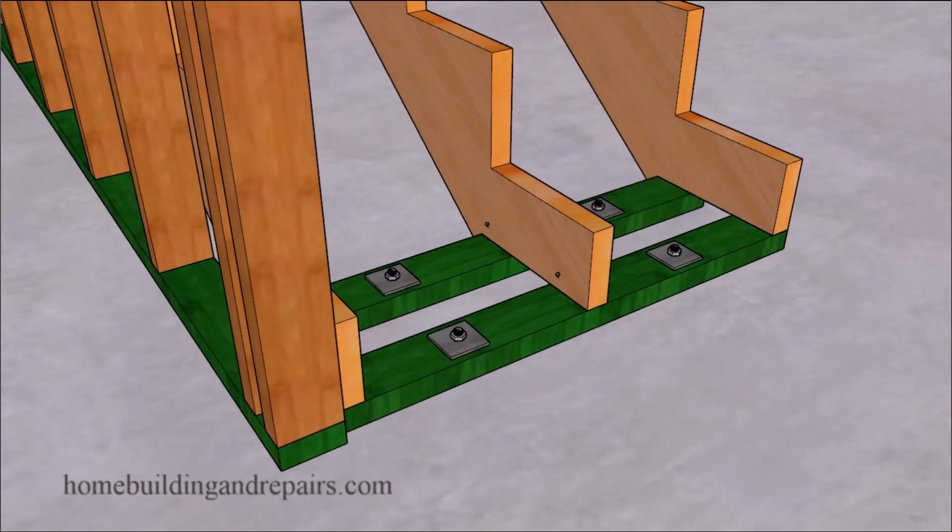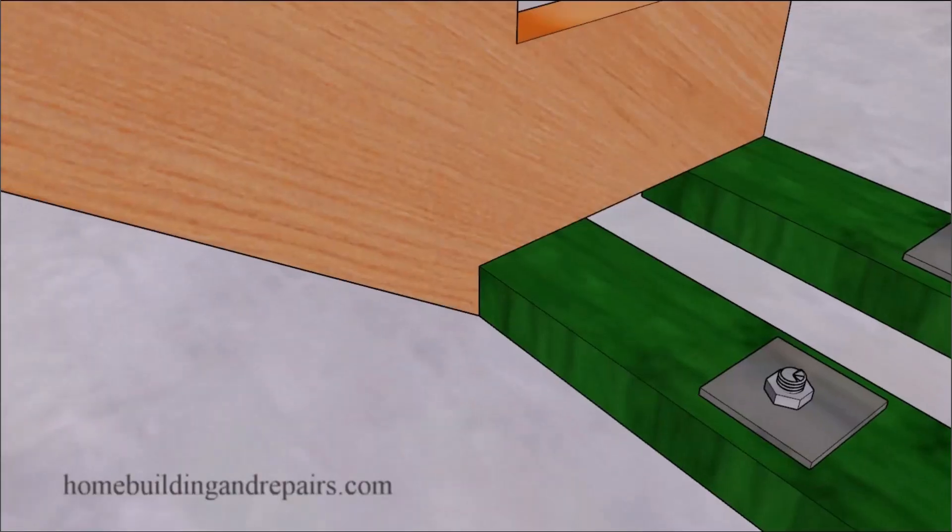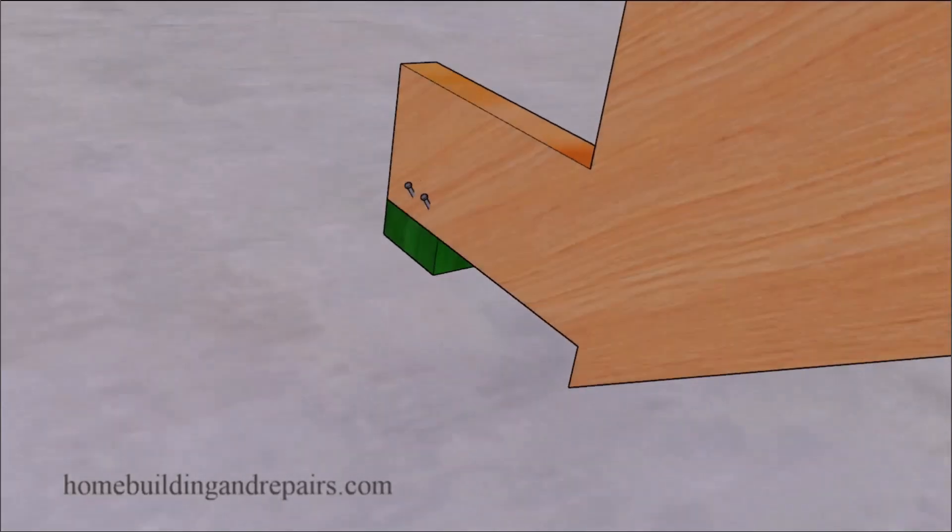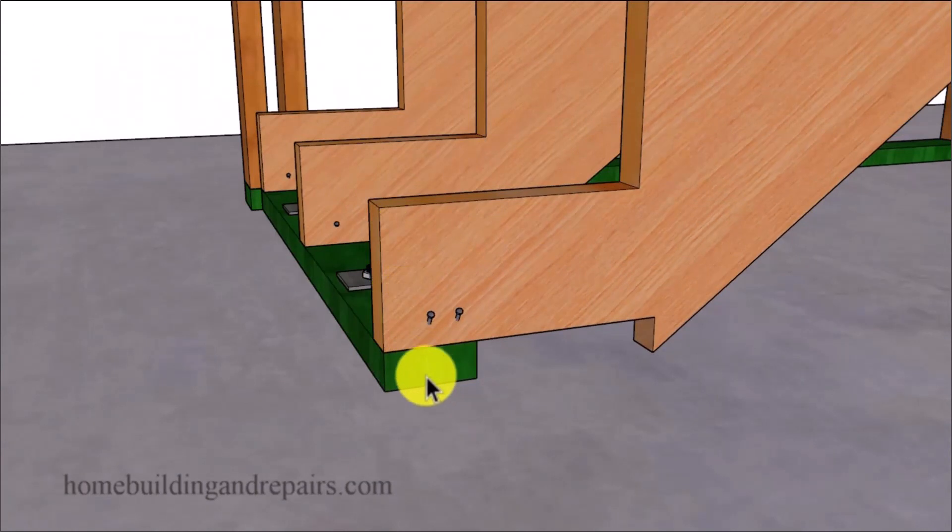You're going to be able to use two framing plates that you can use to attach the stringers securely to the foundation and have your notch here to prevent the stairs from sliding forward, to prevent the stringers from sliding forward.